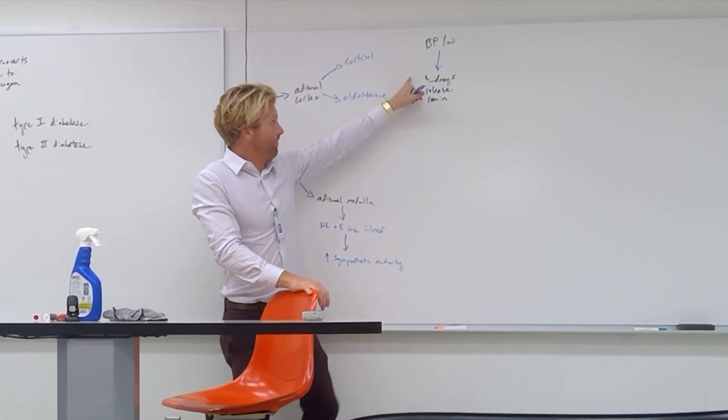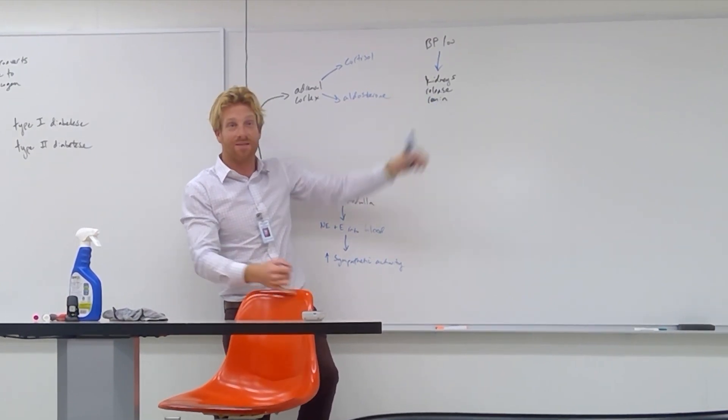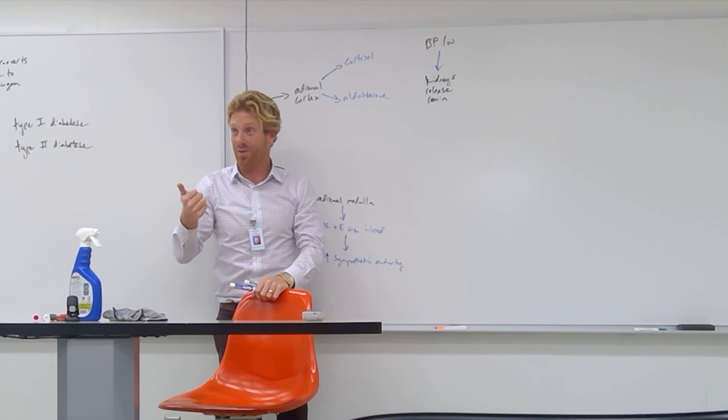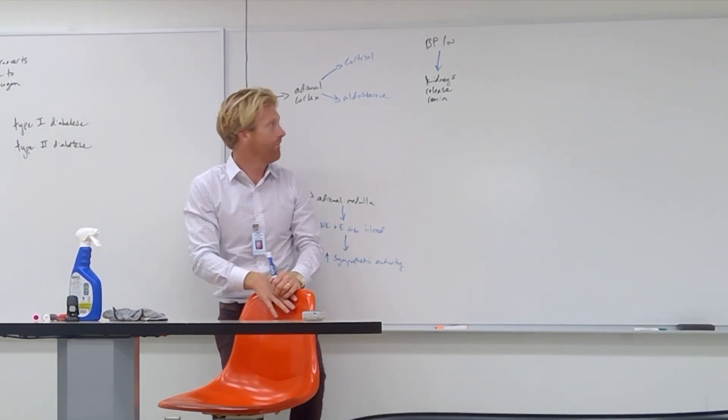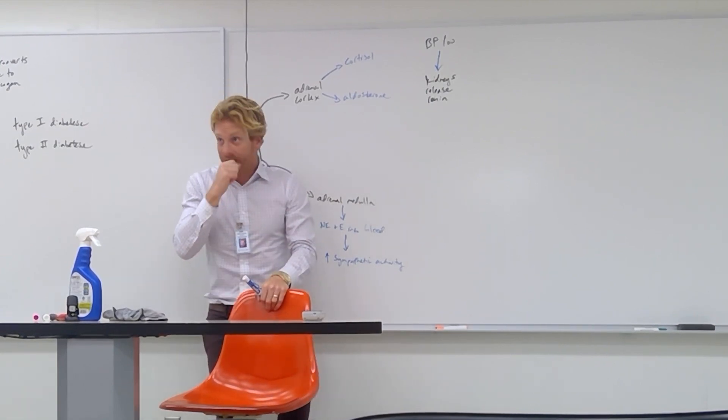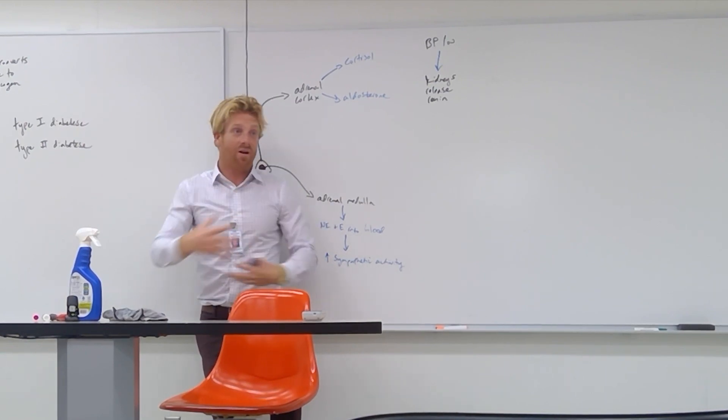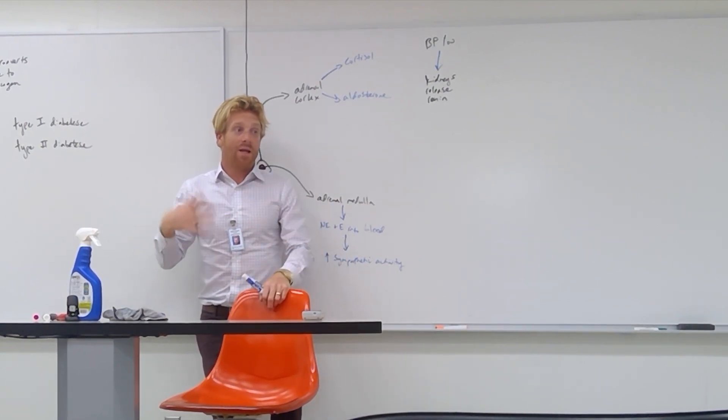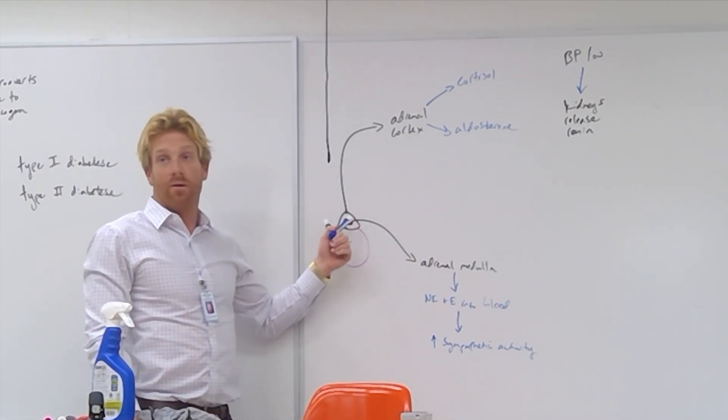Taking in mind that I simplified some things here. Just because the kidneys release renin, that means the kidneys detect that blood pressure and they release the hormone. Renin is a hormone. He gets released into the blood. He circulates all around the body.